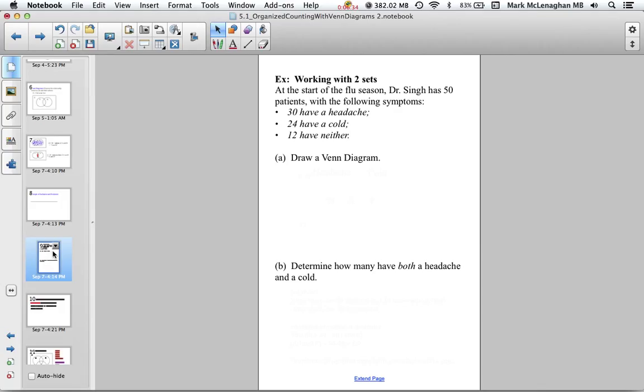An example: Dr. Singh has 50 patients with the following symptoms—30 have headaches, 24 have colds, 12 have neither. We want to draw a Venn diagram.